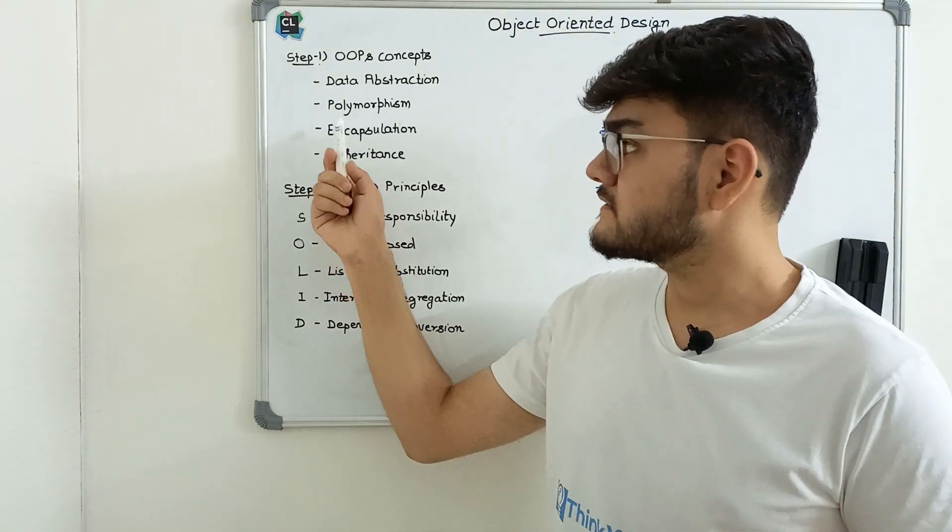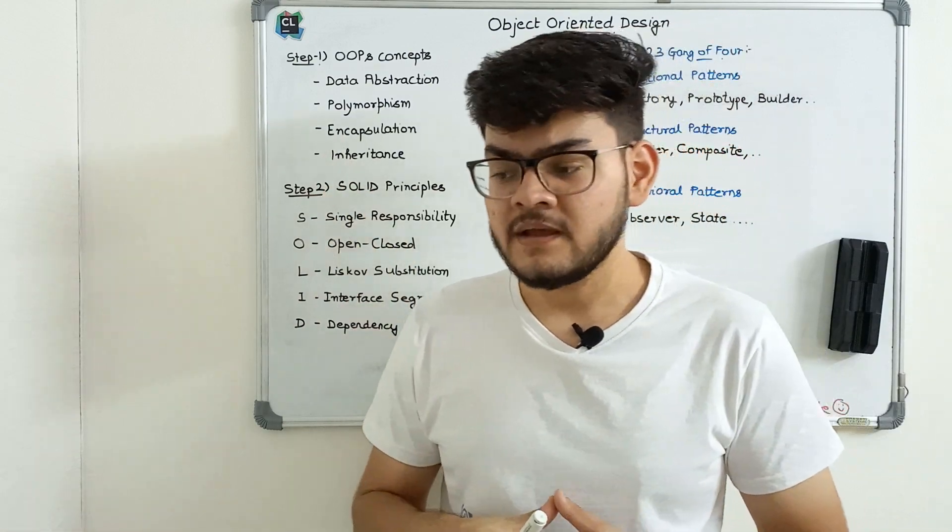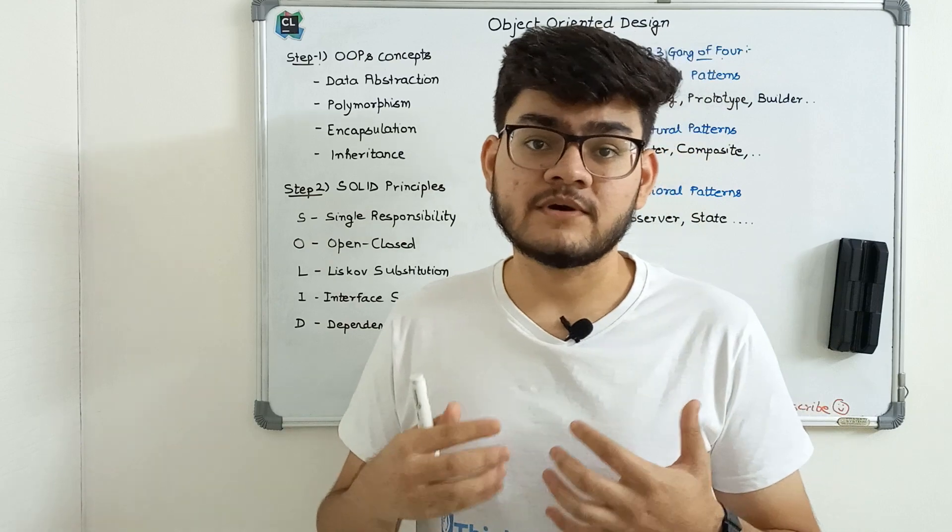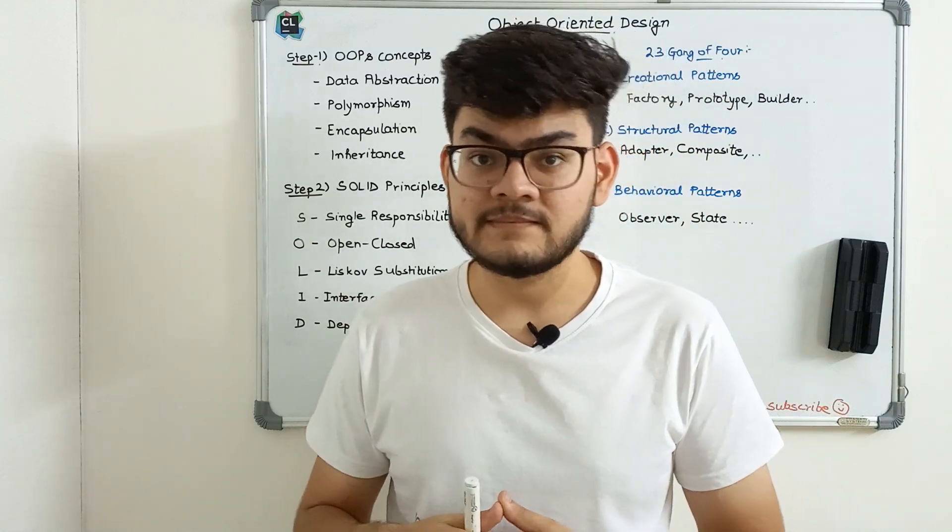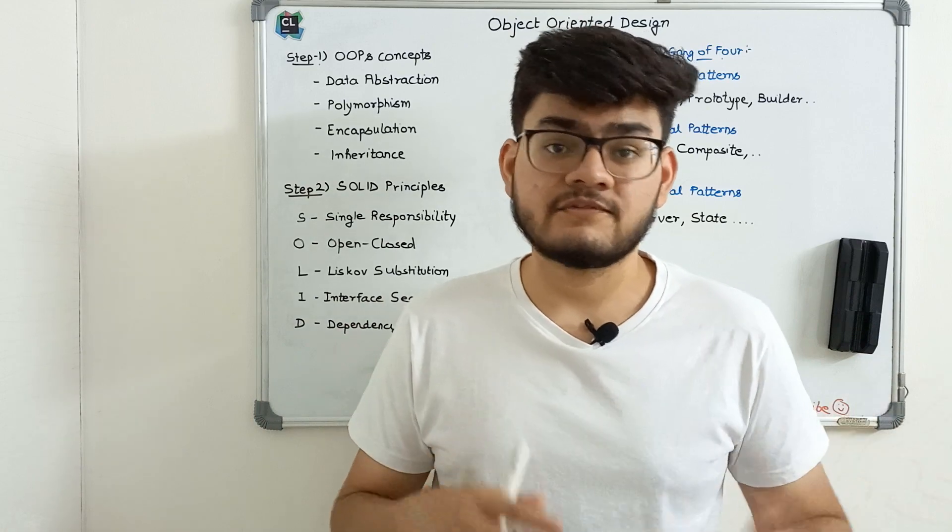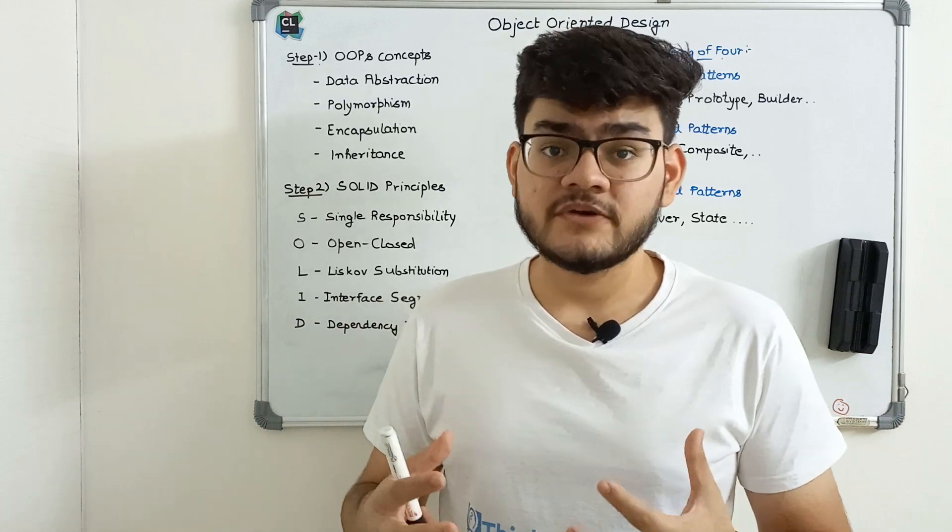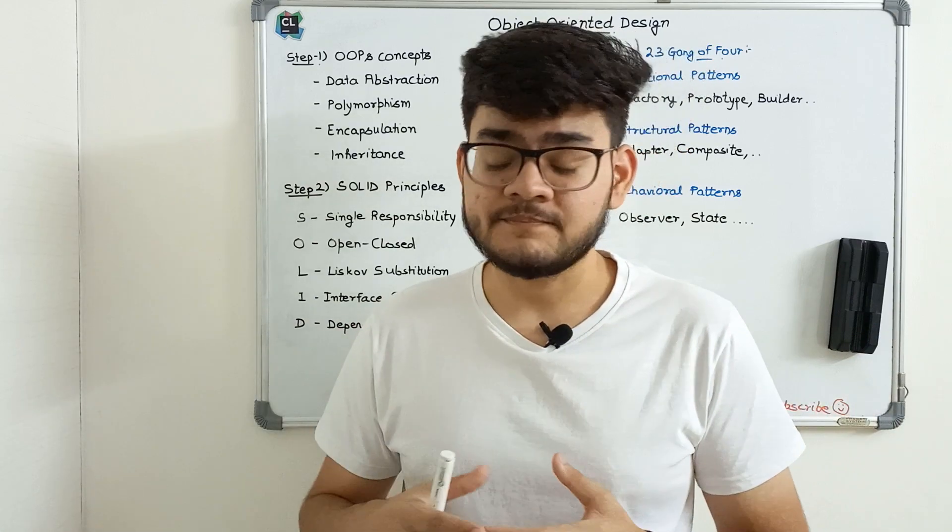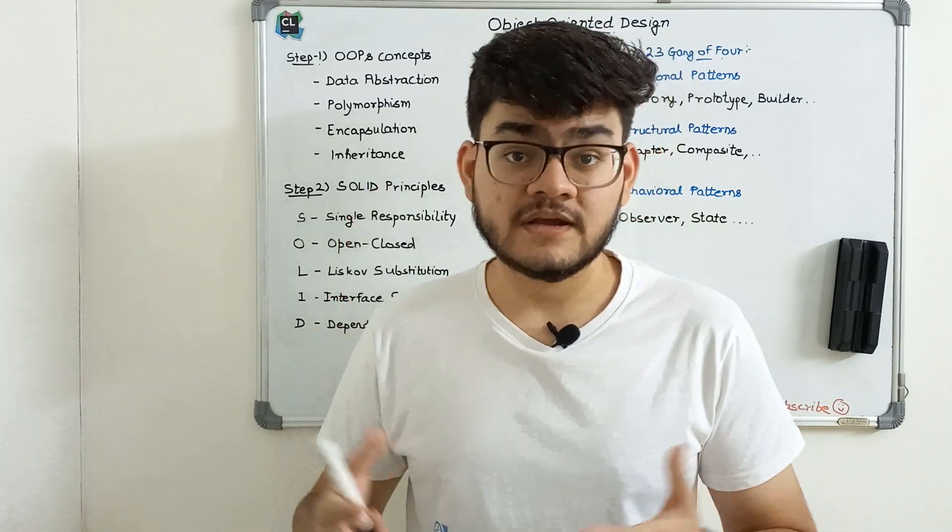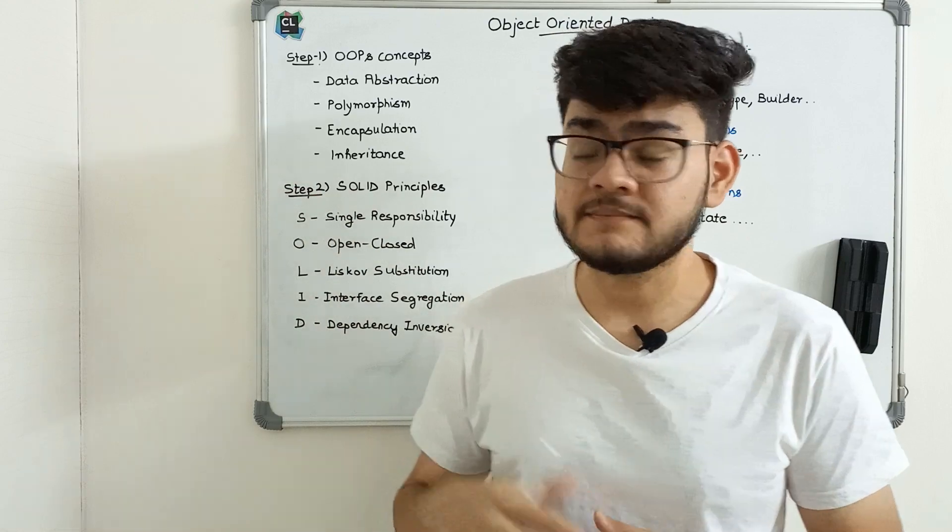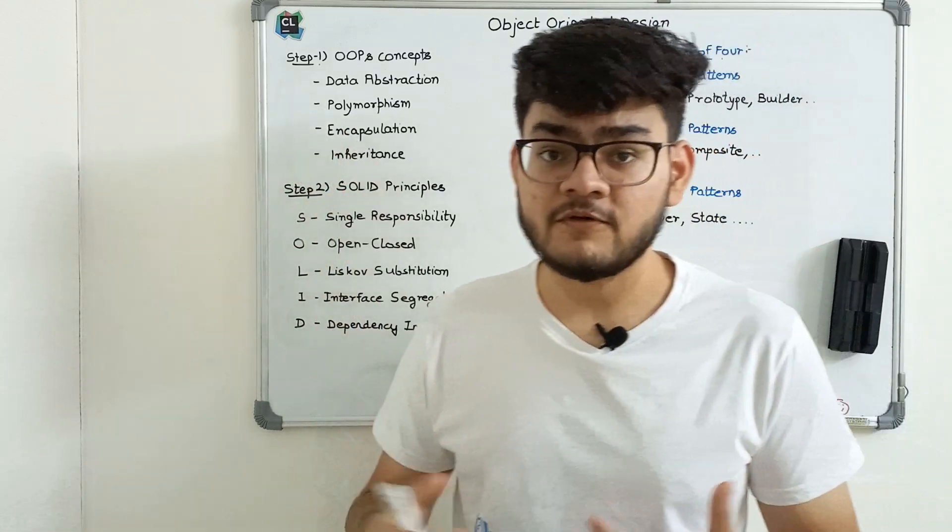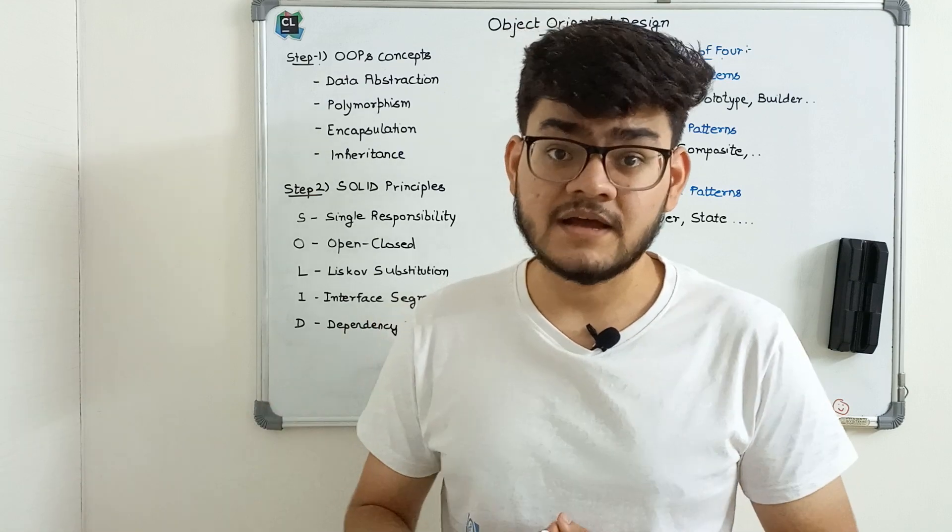These are very important OOPs concepts. What's the big deal? Let's go back 10 or 15 years. When object-oriented programming first came into picture, tech companies were using concepts like encapsulation, data abstraction, and polymorphism extensively across the industry.